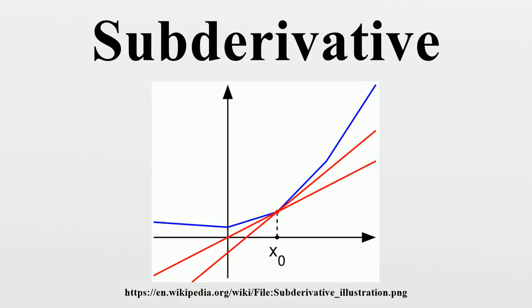The concepts of sub-derivative and sub-differential can be generalized to functions of several variables. If F:U→R is a real-valued convex function defined on a convex open set in the Euclidean space Rⁿ, a vector v in that space is called a sub-gradient at a point x₀ in U if for any x in U one has... where the dot denotes the dot product.